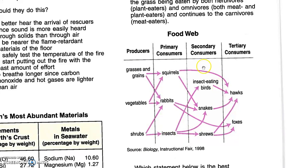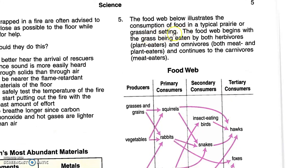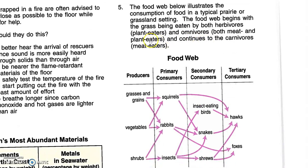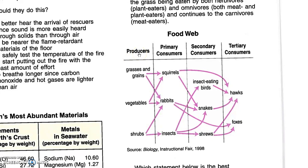The food web has four sections. The first section is the producers. It begins with the grass being eaten by both herbivores and omnivores. Producers are organisms which are able to do photosynthesis and fix energy.